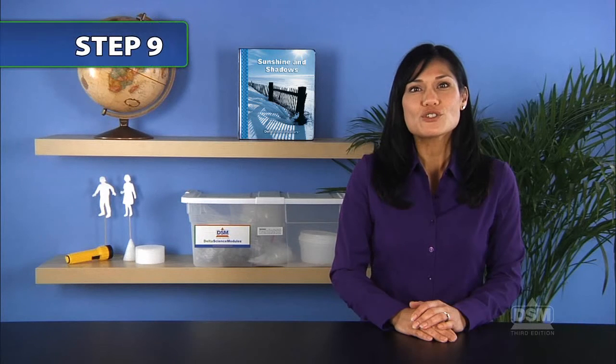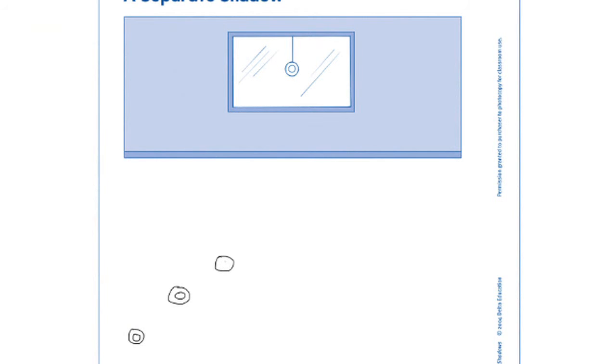Finally, give each student a copy of activity sheet seven and instruct students to draw the shadows they observe during the day beneath the picture of the window.